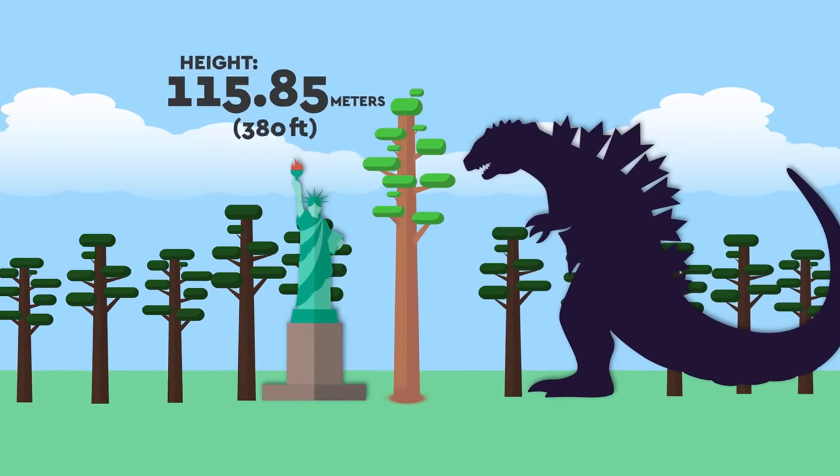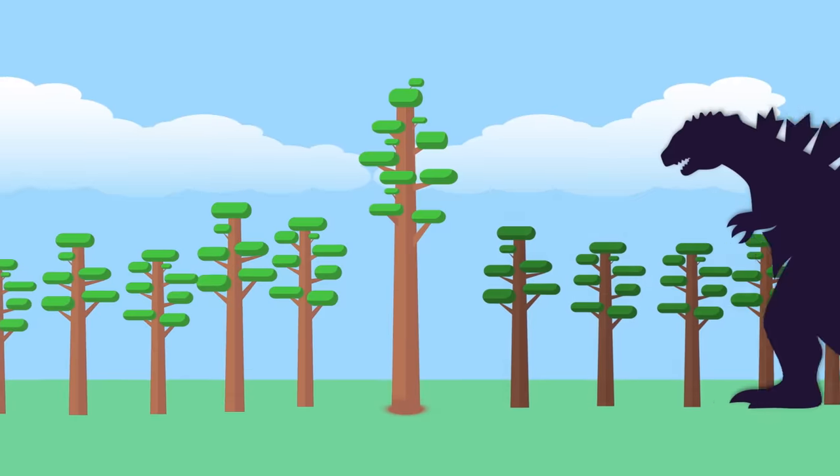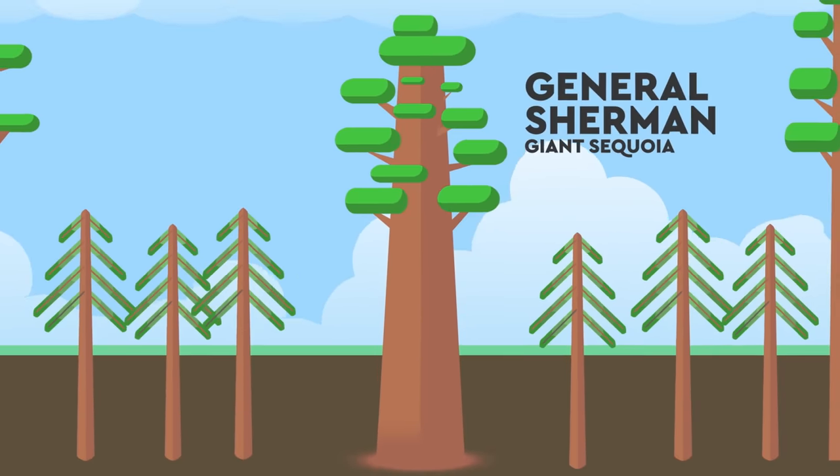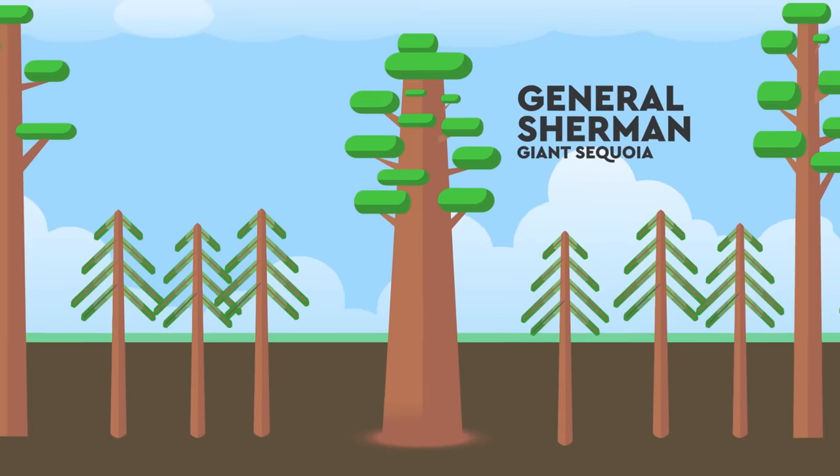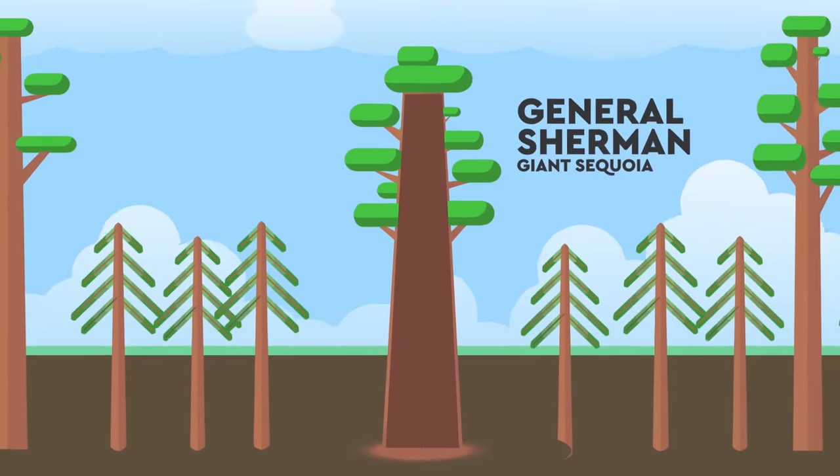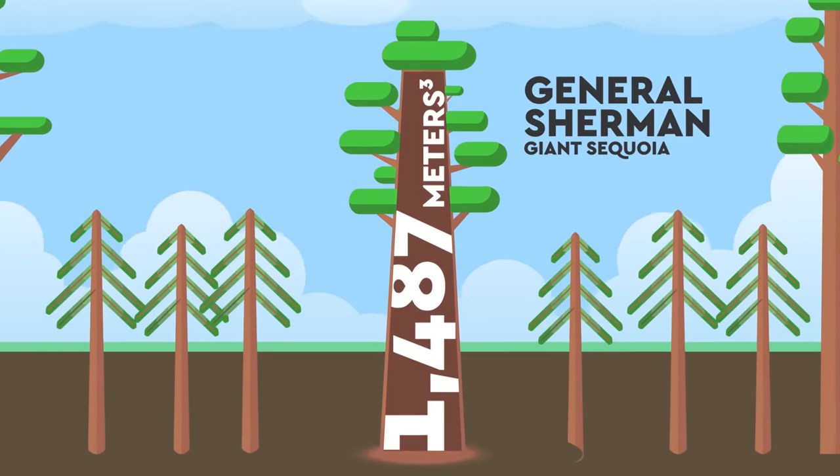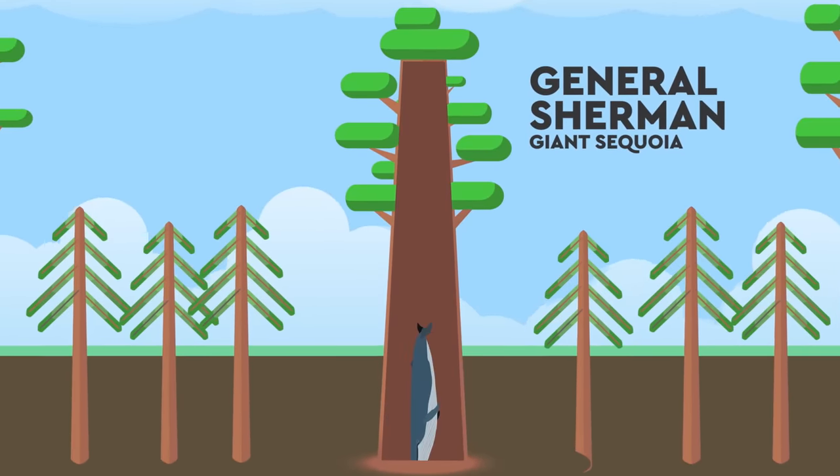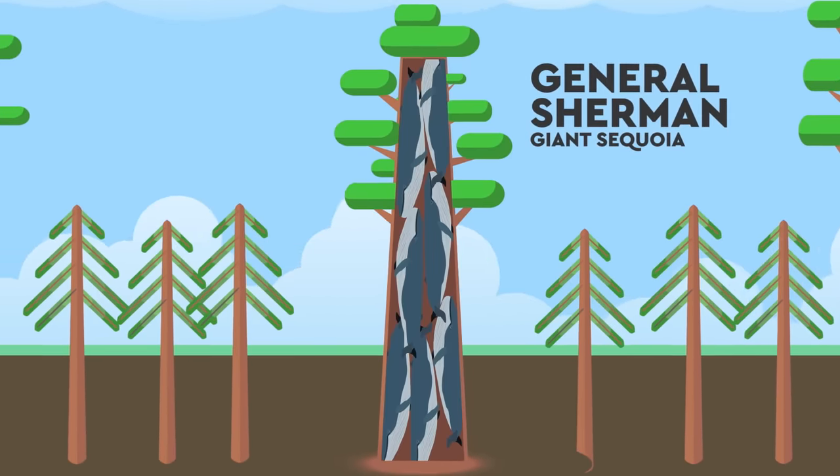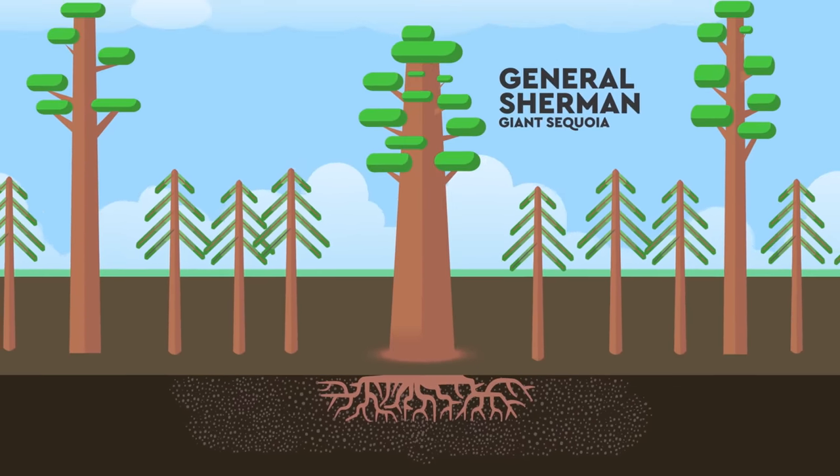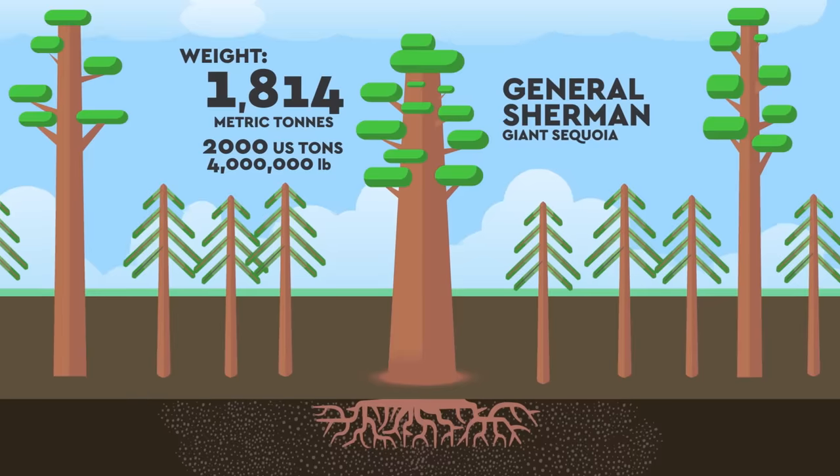Yet height isn't everything, we're after the largest, and that doesn't necessarily mean the tallest. So for that, we need to travel down the coast to meet General Sherman, a 2,100-year-old giant sequoia. He may stand at a humble 82.6 meters tall by comparison, but has a whopping volume of 1,487 cubic meters, blowing old Bluey out of the water. Because in fact, you could squeeze around seven blue whales inside this tree. When the General's root system is taken into account, it's believed that this single organism would weigh 1,814 tons.